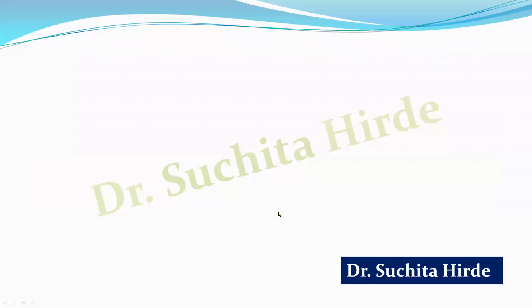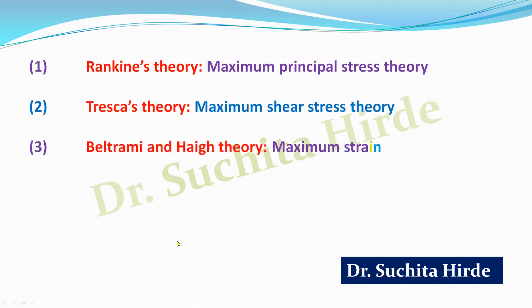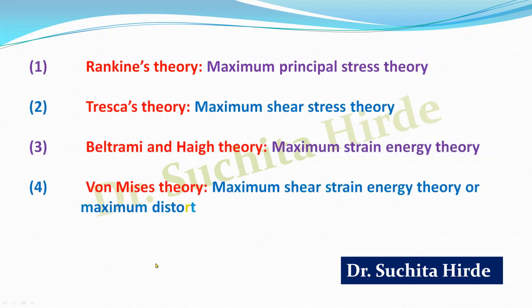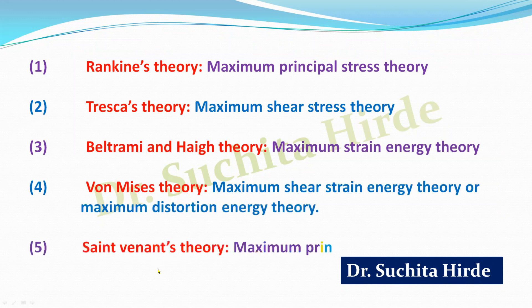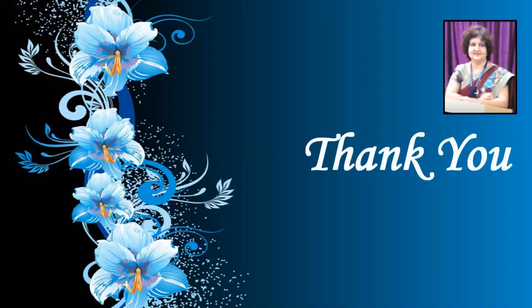In this video we have discussed five theories of failure: Rankine's theory, Tresca's theory, Beltrami and Haigh theory, Von Mises theory, and St. Venant's theory. I hope you have understood these theories and how to apply them to solve numerical examples. Stay connected to get more videos on theories of failure and structural analysis. Thank you for watching.